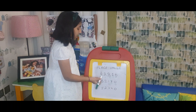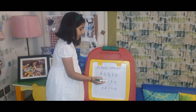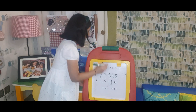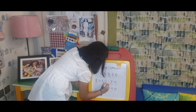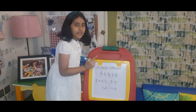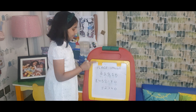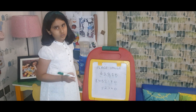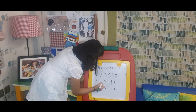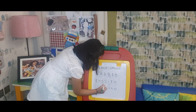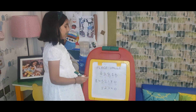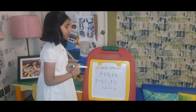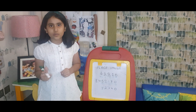Then the digit on the left side of hundreds is going to be thousands, so I'm going to write a T over there. Then the digit on the left side of thousands is going to be ten-thousands, so I'm going to write a double T over there. Then the digit on the left side of ten-thousands is going to be one lakh, so I'm going to write an L over there.